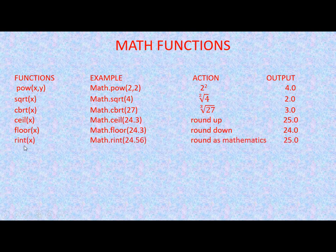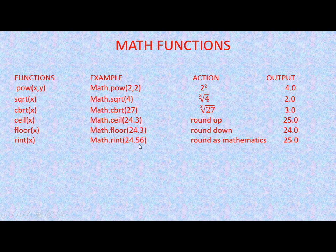The next function is rint — rounding to the next integer value. This function rounds to the nearest integer the same way we do in mathematics. For example, the round value of 24.56 is 25, because after the decimal point we have 5, and in mathematics if the digit after the decimal is 5 or more we round up to the next integer. So rint returns the same value as standard mathematical rounding.